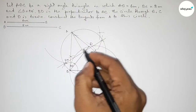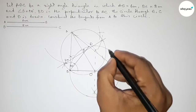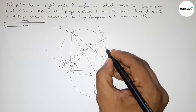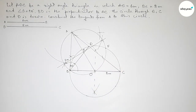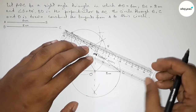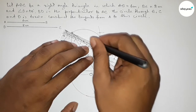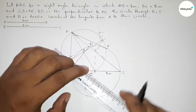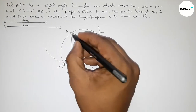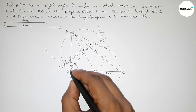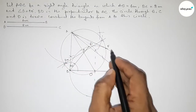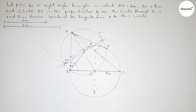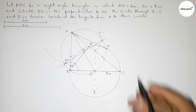The new circle intersects the first circle at two points — one is point B and the other is taken as point F. So we have found two tangents: AB and AF. These are the two tangents from point A to the circle.